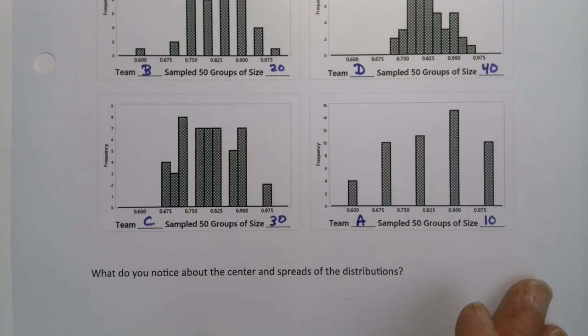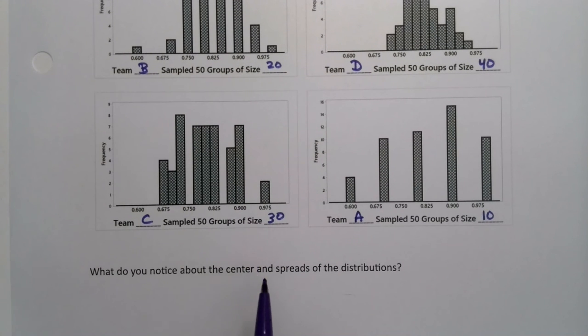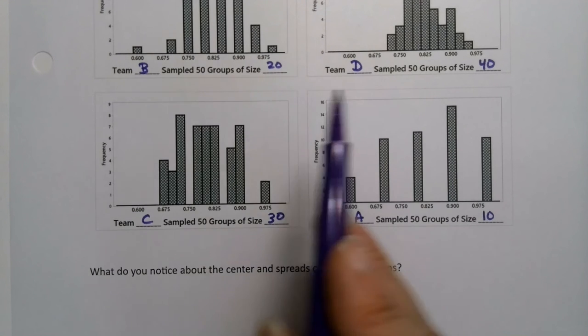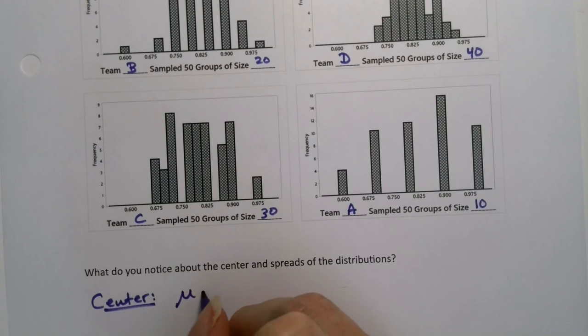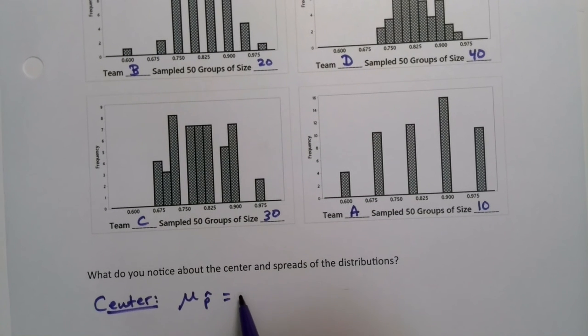Now, what do I notice about the spread and the centers for all of these? Well, the center is about the same. The center for every graph is about .83. So the center is the mean of the P hats. And it's about .83 for all graphs.